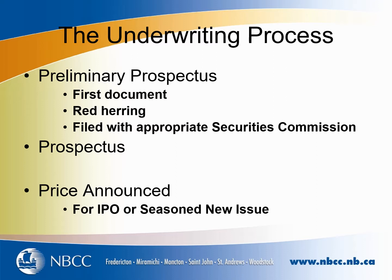With regard to the underwriting process, there are a number of steps the underwriting firm takes to bring the issue to the public. The first step is that a preliminary prospectus is prepared. The underwriter conducts a due diligence exercise to ensure they are aware of everything concerning the company and its industry, and they prepare this preliminary prospectus to outline the company's dealings and information on the security being brought to market. This preliminary prospectus is called a red herring prospectus because there is a notation in red on the front stating that it has not been approved by the Securities Commission and is not yet available for sale.